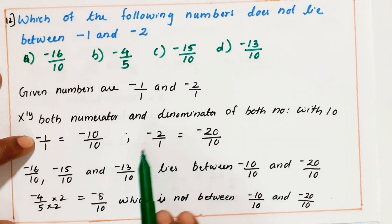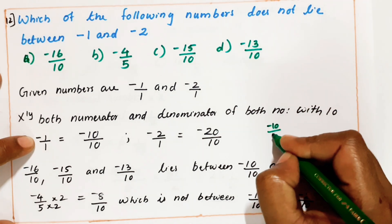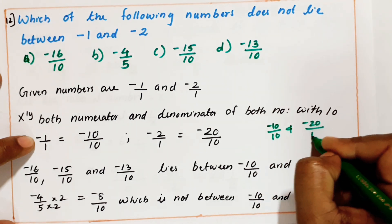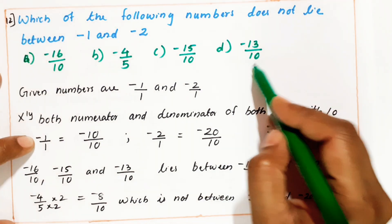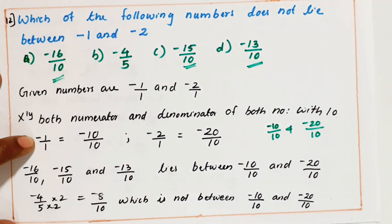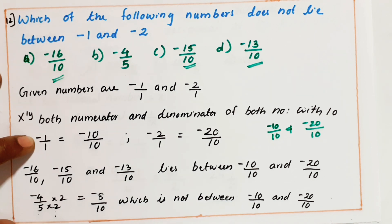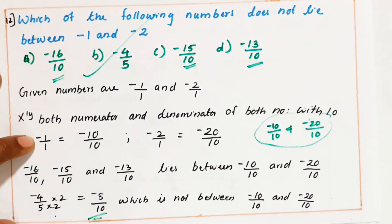So we got the range: minus 10 by 10 and minus 20 by 10. If you check, minus 13 by 10 is in the middle, minus 15 by 10 is in the middle, minus 16 by 10 is in the middle. But we are doubtful about minus 4 by 5. How to make the denominator 10? Multiply both numerator and denominator by 2: minus 4 into 2 over 5 into 2, so it is minus 8 by 10. It is sure that minus 8 by 10 will not come between these two. So the answer is minus 4 by 5.